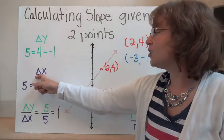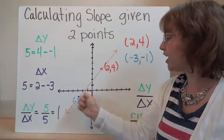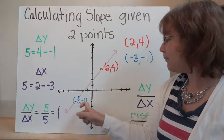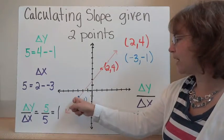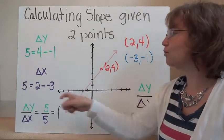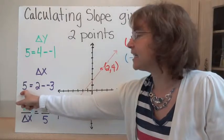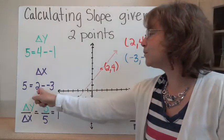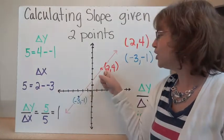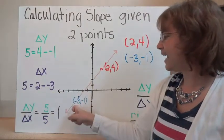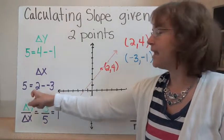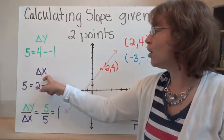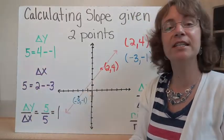We can calculate the change in x as well by looking at it. Our x started at negative three and ends at two, so we've gone three in one direction and an additional two — our change in x is five. We can also take the ending coordinate and subtract where we started: two minus negative three gives us five.